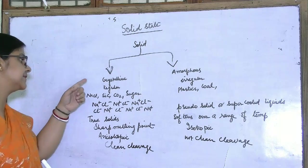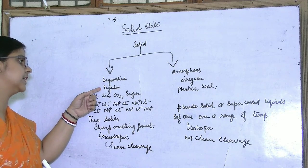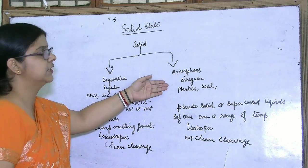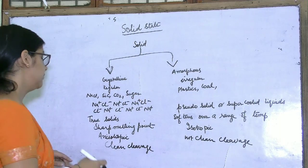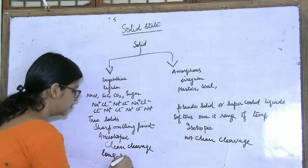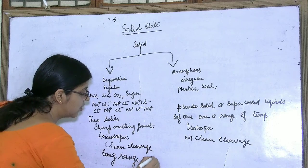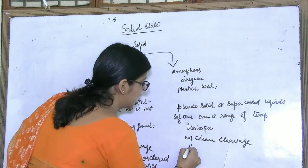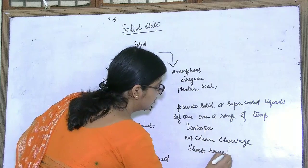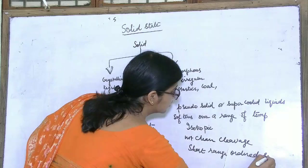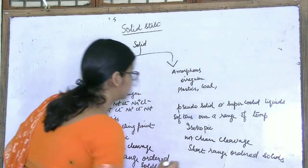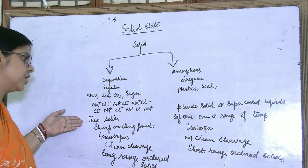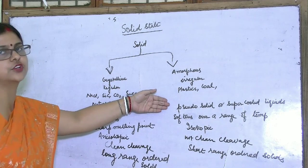In crystalline solids, the arrangement of particles is regular and they follow a definite pattern, so they are also known as long range ordered solids. While amorphous solids are known as short range ordered solids. Crystalline solids are known as true solids, while amorphous solids are known as pseudosolids or supercooled liquids.